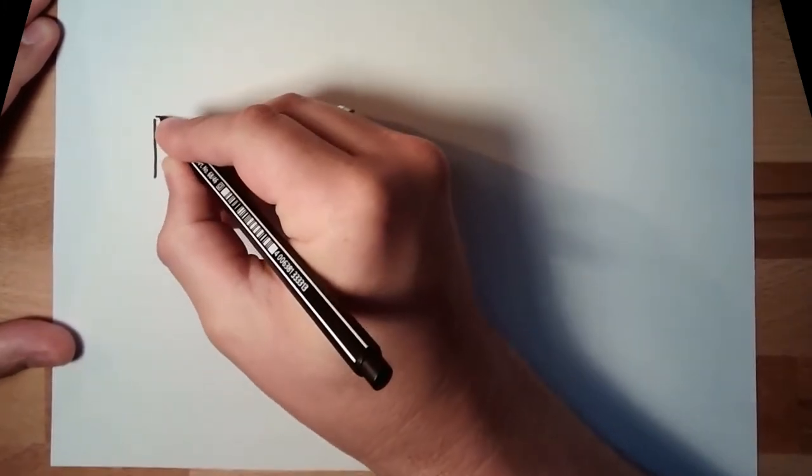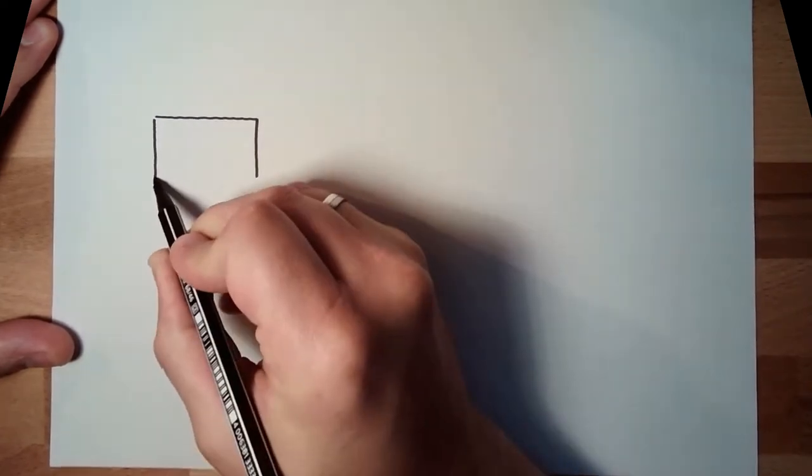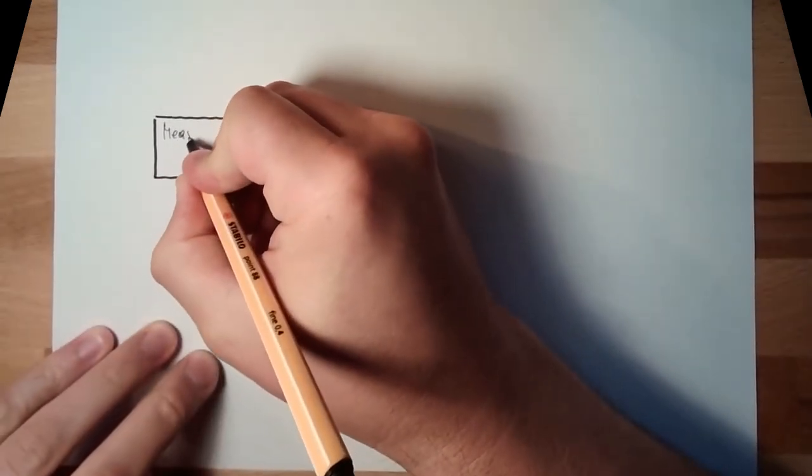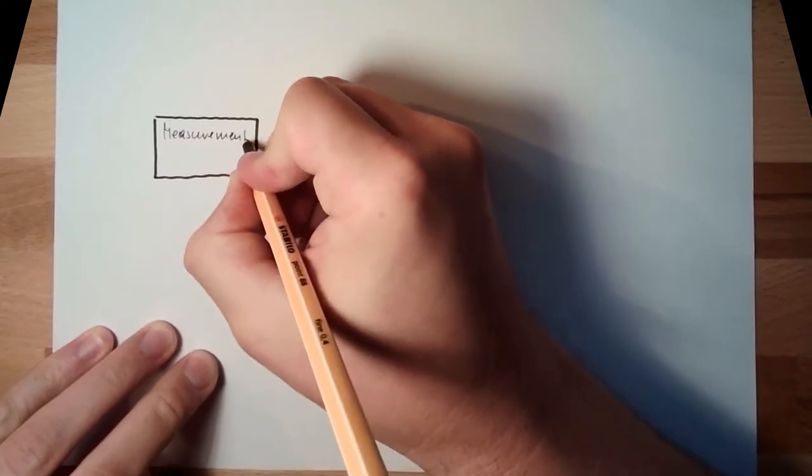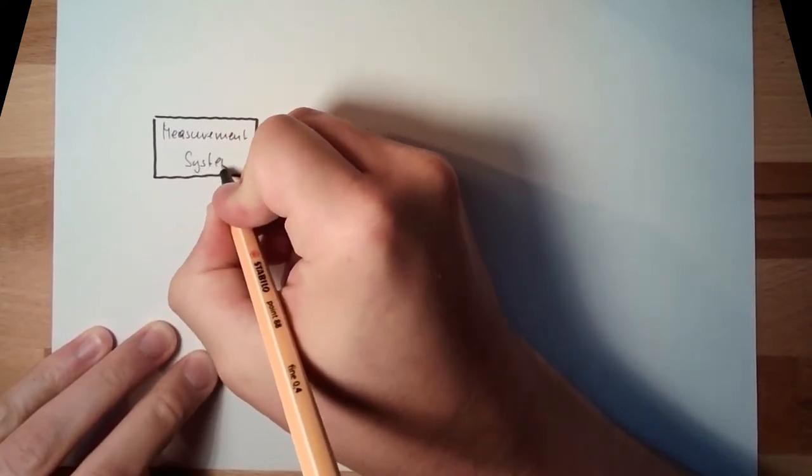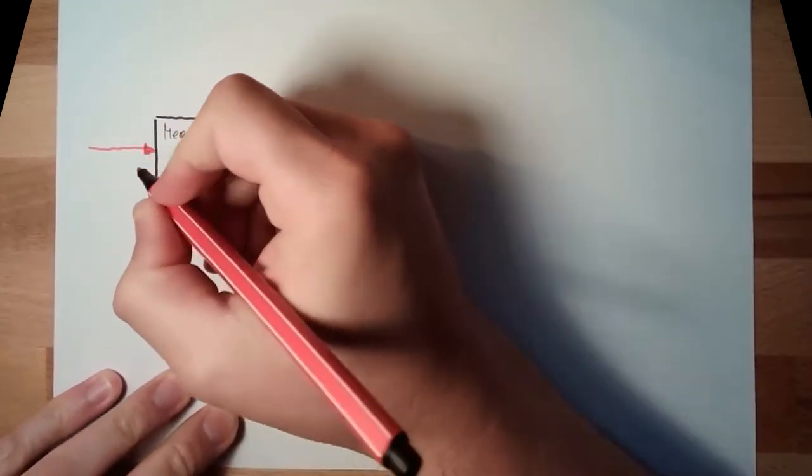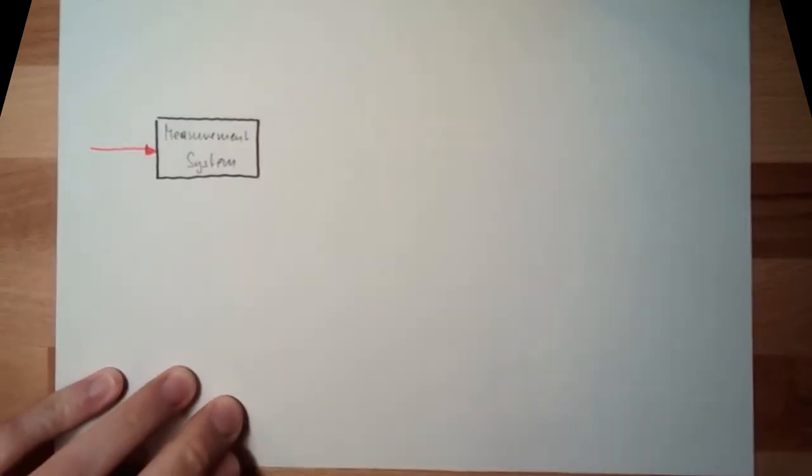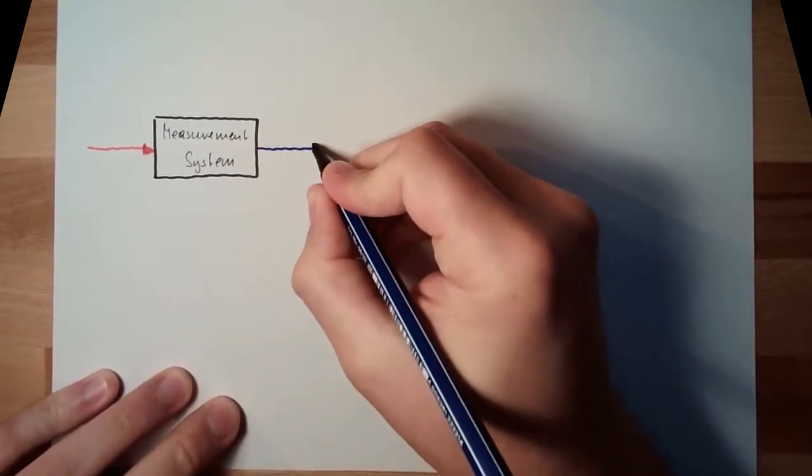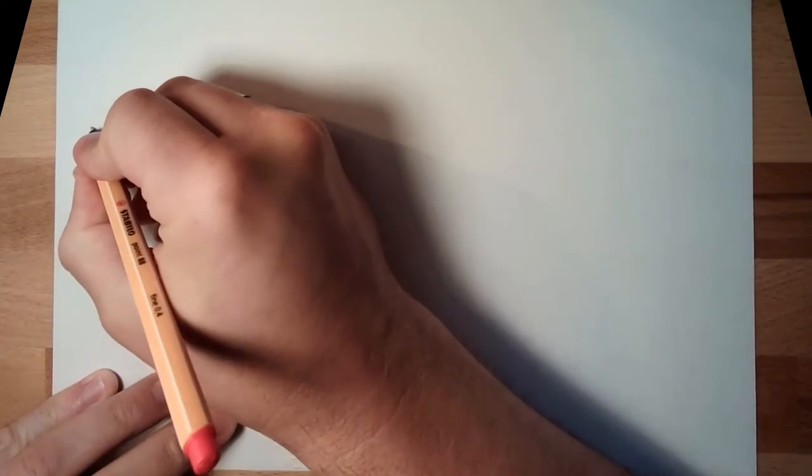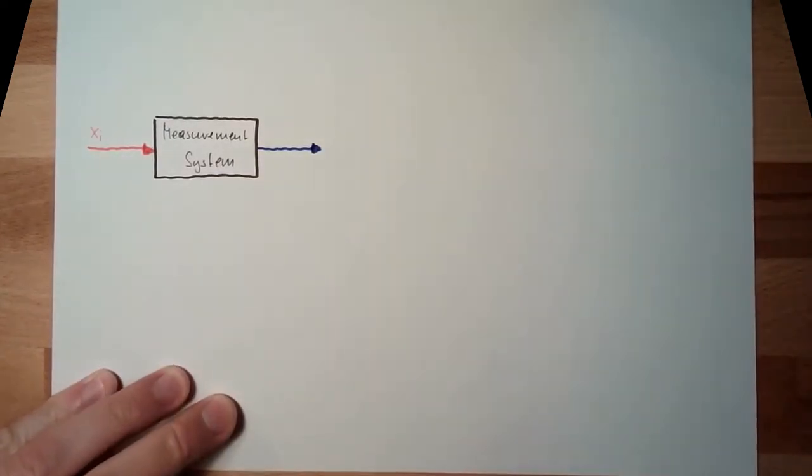Shortly make a drawing of the measurement system again. We will again look at the measurement system as some sort of box. There is the measurement system and of course we again have our physical quantity which we want to measure and we have some displayed value. That's the input value XI and that's the output value XO.